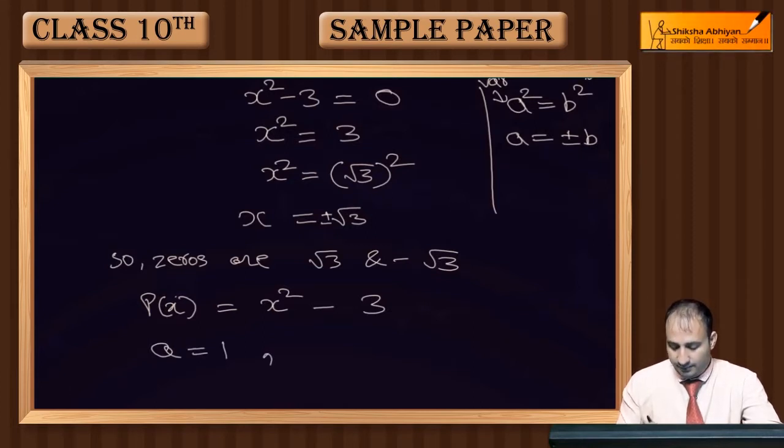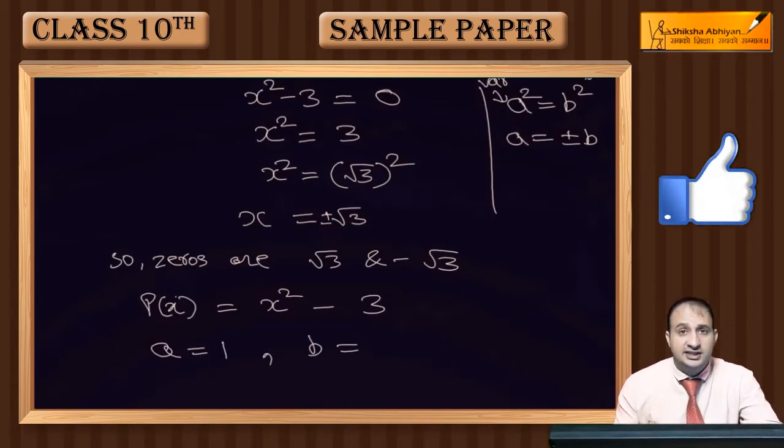The coefficient of x, since there is no x term present, means the coefficient of the missing term is 0. And the constant term is -3.